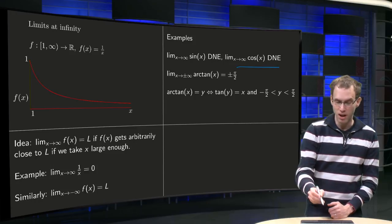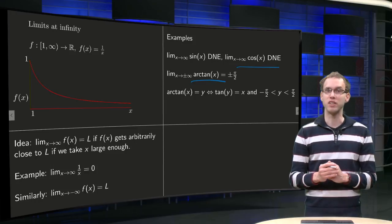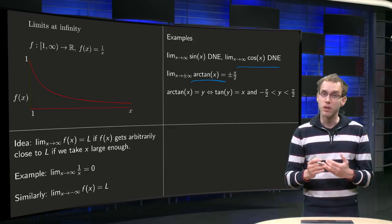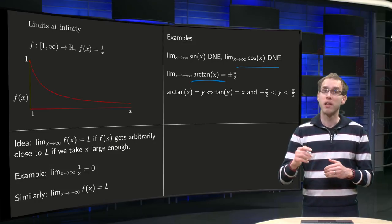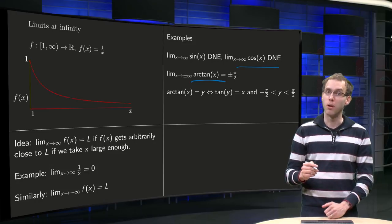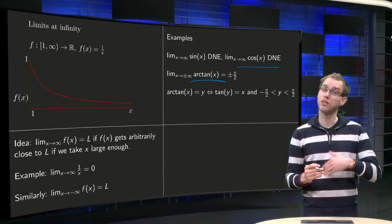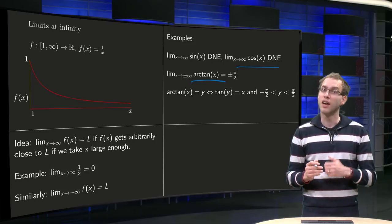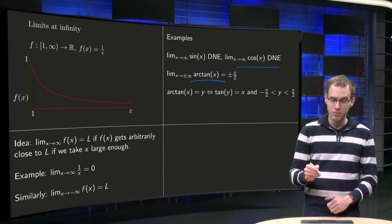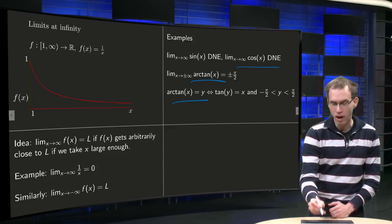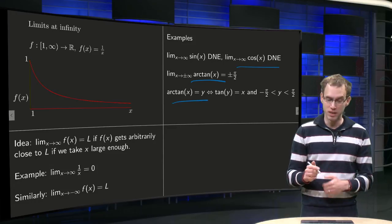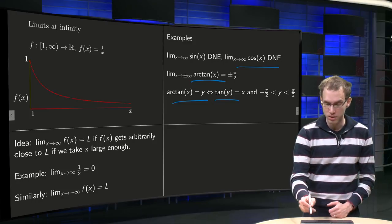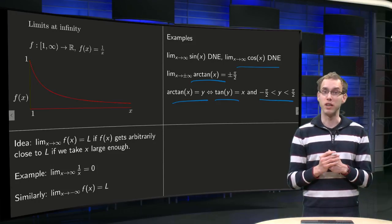What about the function arctan(x)? What happens if x tends to infinity? You may notice from the graph that the function values tend to ±π/2 — plus π/2 for x → +∞, and minus π/2 for x → −∞. To see why: if arctan(x) = y, that means we solve tan(y) = x with y between −π/2 and π/2.